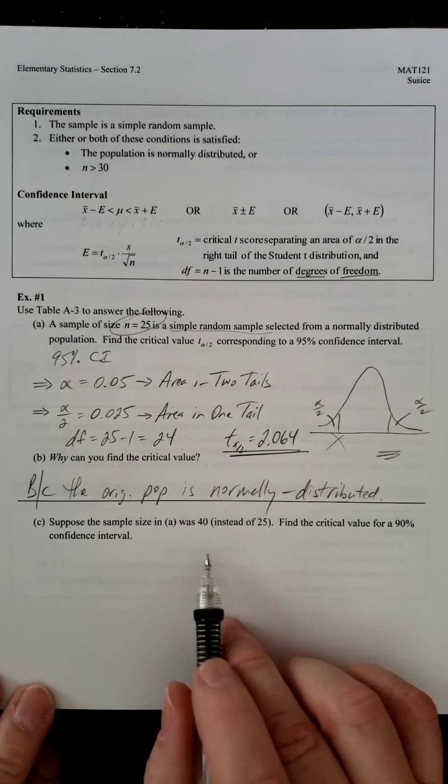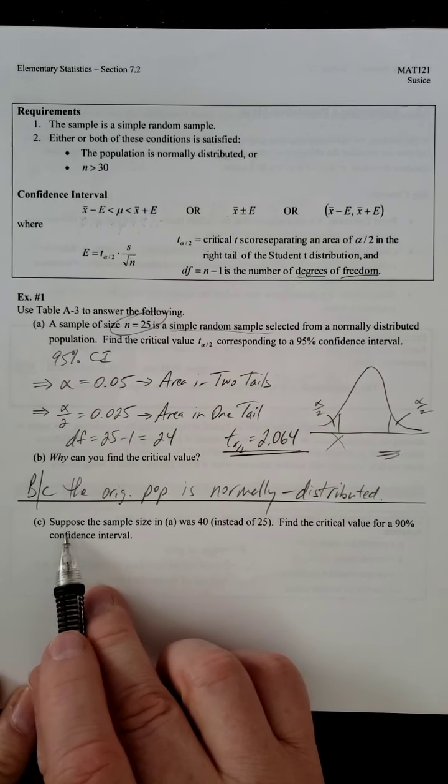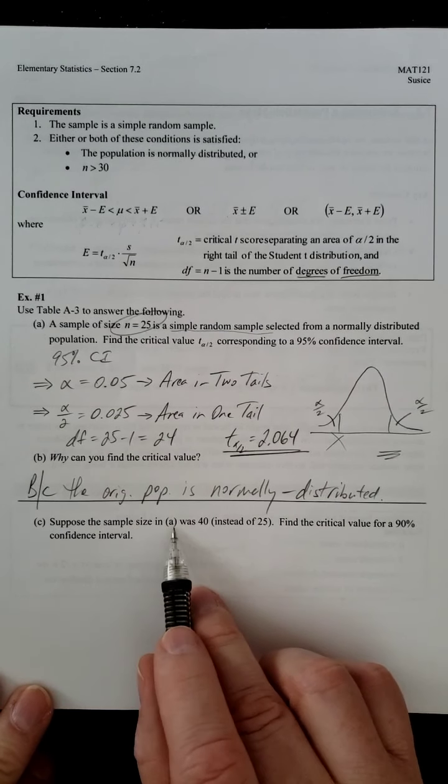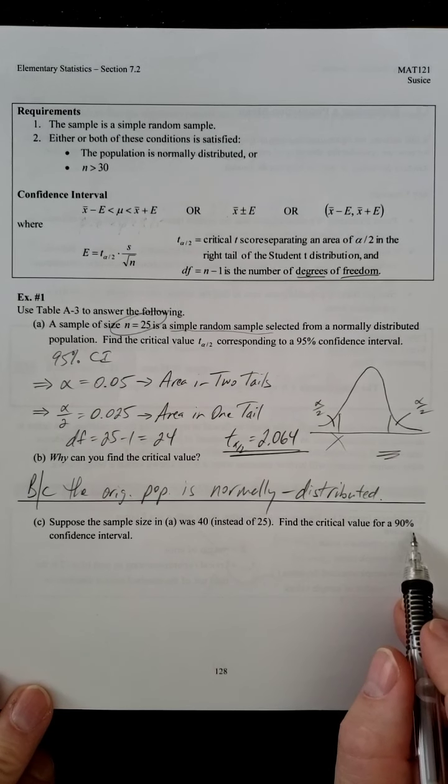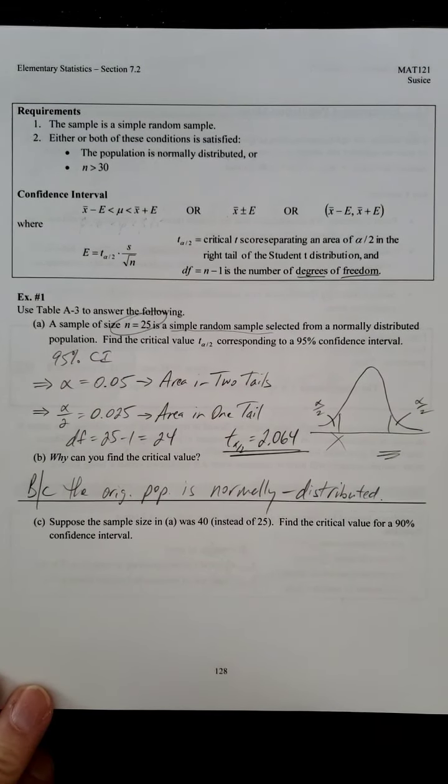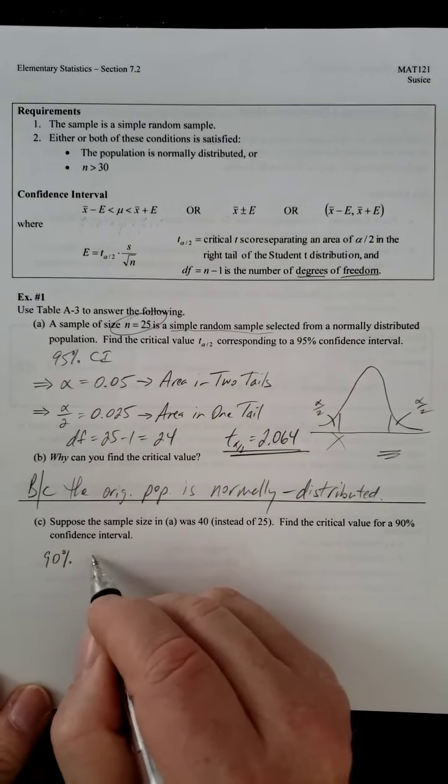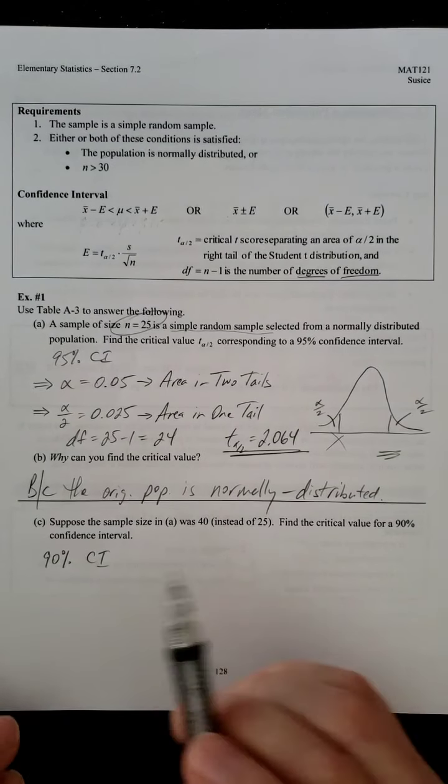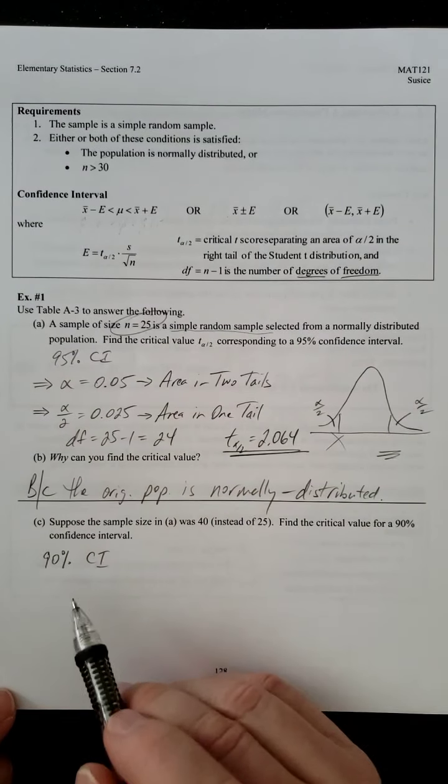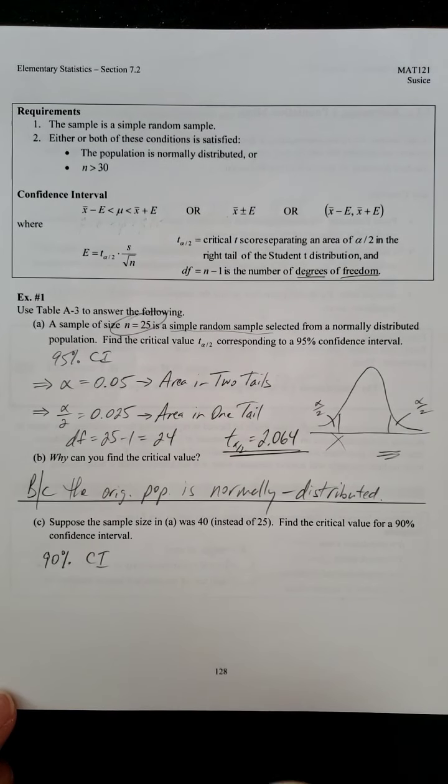So, now let's do it one more time with some different situations in place. We have supposed to sample size and A was 40 instead of 25. Find the critical value for a 90% confidence interval. Okay, so, if we have a 90% confidence interval. Now, the one thing to be careful about, remember, these ones were special when they were Z-scores. When they're T-scores, they're not.